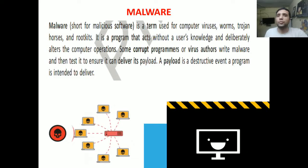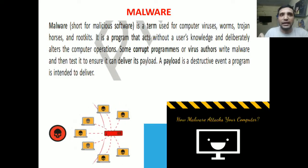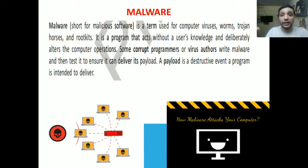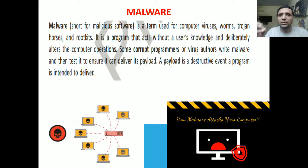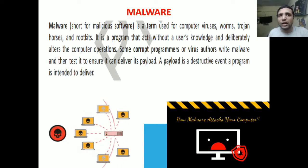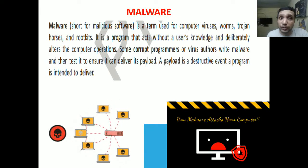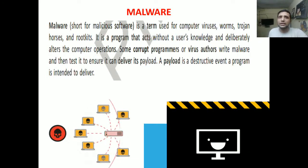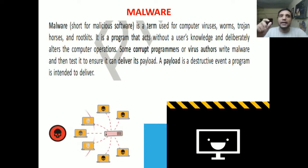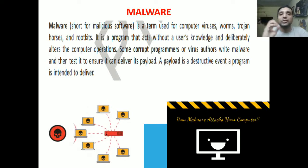The first topic is malware. Malware is actually a short form of malicious software, intentionally made. It comprises different kinds of threats — you can call it a virus, a worm, a trojan horse, rootkit, and so on. It is a program that acts without the knowledge of the user and deliberately alters computer operations. Corrupt programmers or virus authors write this malware and test it to ensure it can deliver its payload. A payload is a destructive event or program developed and intended to deliver damage or harm to data across different systems.